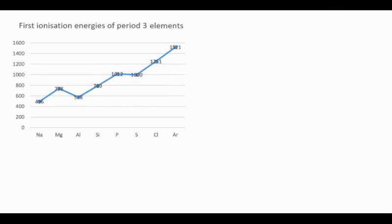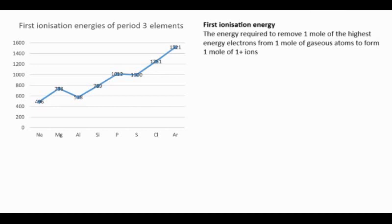This video explains the pattern of first ionization energy going across period 3 from left to right. But what is first ionization energy? The exam definition is it's the energy required to remove one mole of the highest energy electrons from one mole of gaseous atoms to form one mole of 1+ ions. But that's a bit of a mouthful. You can just think of it as the energy needed to remove the outer electron from an atom.